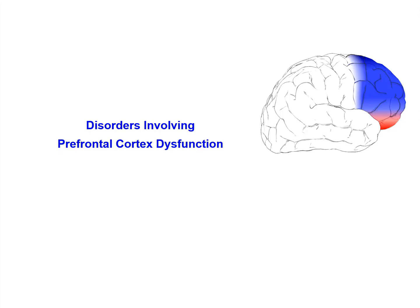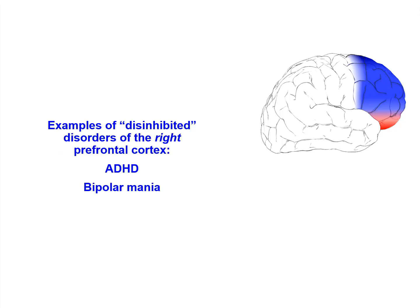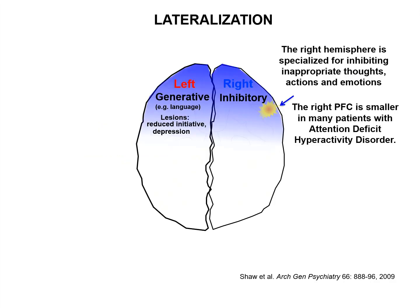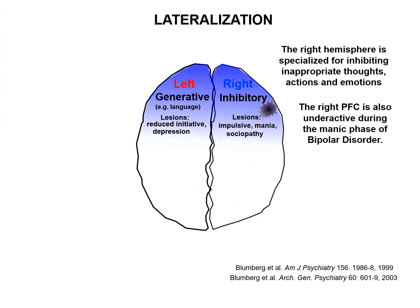Many mental illnesses are caused or worsened by stress exposure, which likely involves stress-induced prefrontal dysfunction. Now let's see how this information relates to disinhibited disorders: ADHD and bipolar mania. As we learned, the right hemisphere is specialized for inhibiting inappropriate thoughts, actions, and emotions. The right prefrontal cortex is smaller or develops more slowly in many patients with ADHD, which may help explain impaired impulse control and greater vulnerability to distracting stimuli. The right prefrontal cortex is also very underactive during the manic phase of bipolar disorder, but returns to normal when the patient becomes euthymic — when they've returned to a normal mood state.